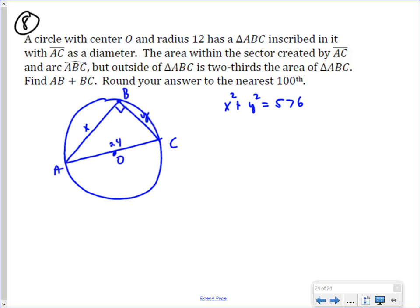Now, the second thing I've got to do is I have to deal with this. And that is the area within the sector created by AC and arc ABC. And so we're talking about this sector right here, which is that semicircle. But outside of the triangle is two-thirds the area of the triangle.